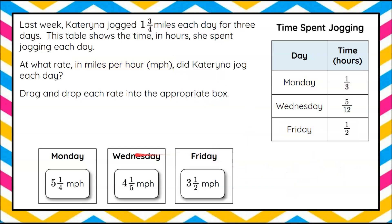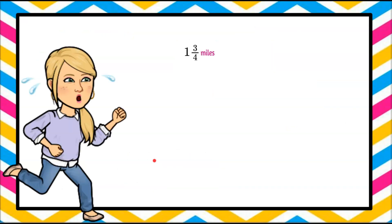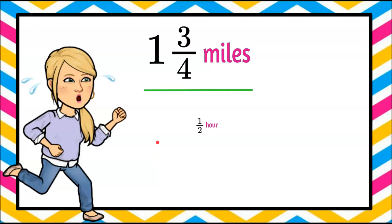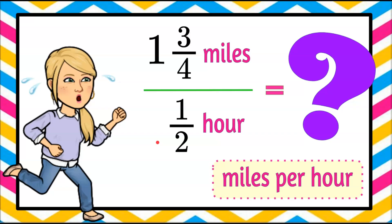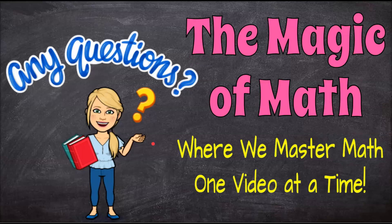And there we have it — Monday, Wednesday, and Friday, all different rates. Sometimes she was jogging faster, sometimes slower. That is how we find miles per hour, our unit rate, given each day: write a complex fraction, change mixed numbers to improper fractions, write as division, and multiply by the reciprocal. Thanks for joining me today at The Magic of Math, where we continue to master math one video at a time. Have a great day and come back soon.